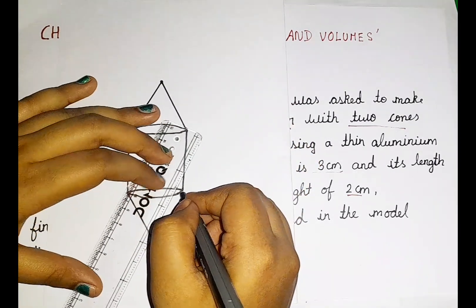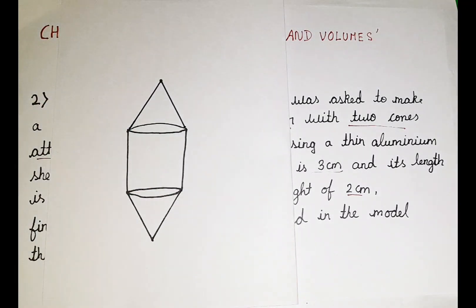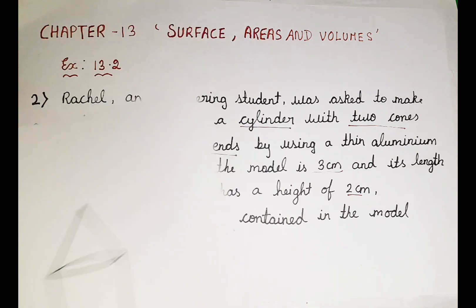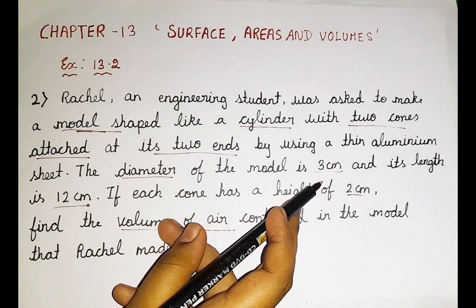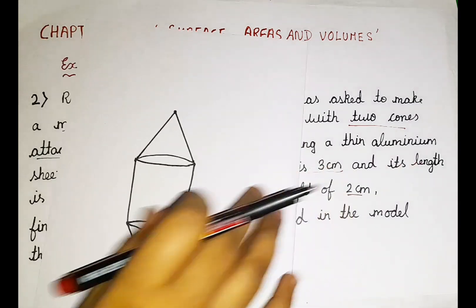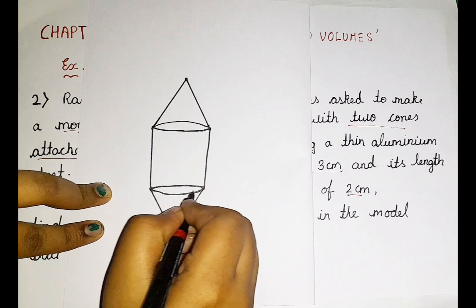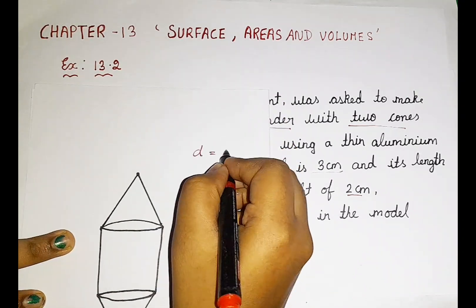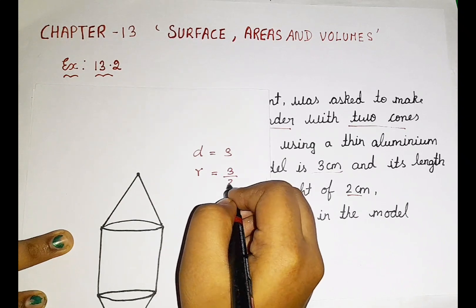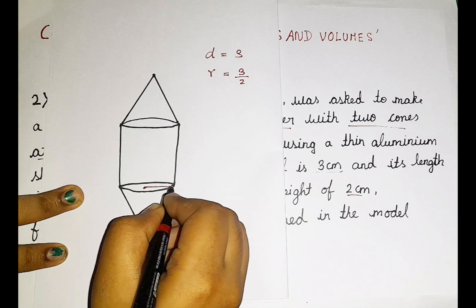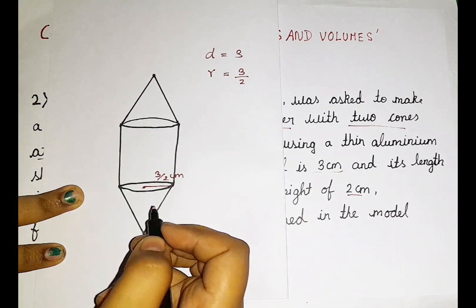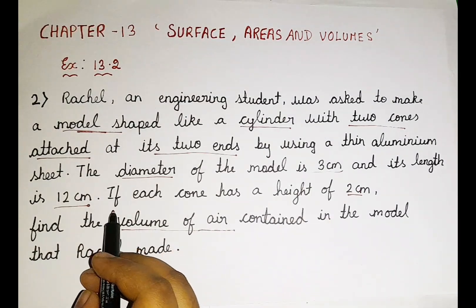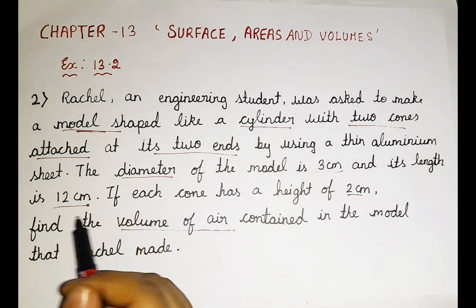So now we drew two cones. According to the question, let us look at the values. The diameter of the model is 3 centimeter. So here you can take this as a diameter. If the diameter is 3, then the radius will be 3 by 2, because radius is half of diameter. So let us write 3 by 2 centimeter. And its length is 12 centimeter. So the model's length is 12 centimeter — that means the complete figure.